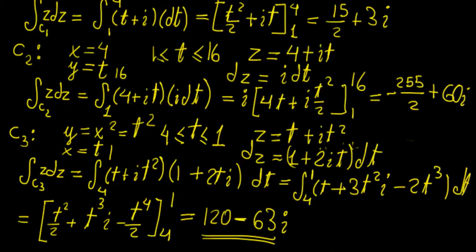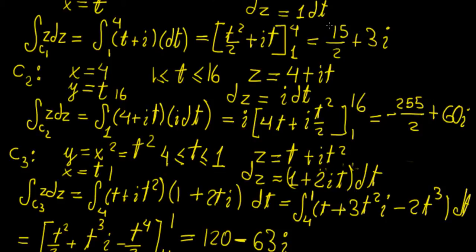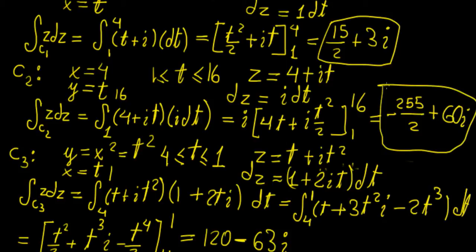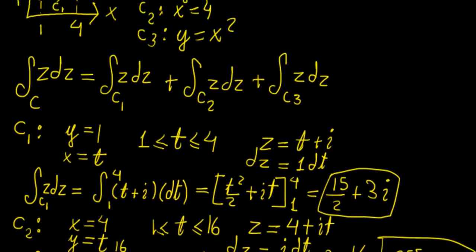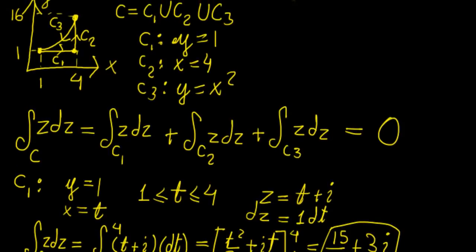Adding the three values together gives us the total integral for the whole function. The result is 0. Interestingly, it doesn't matter what kind of curves we chose, because this is a closed contour — it would be 0 for any shape of curves that form this closed contour.